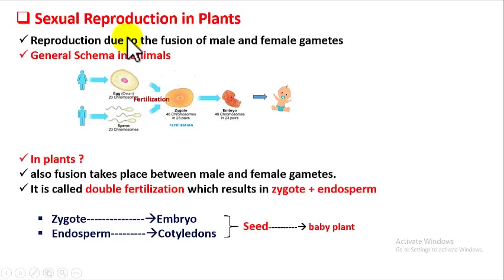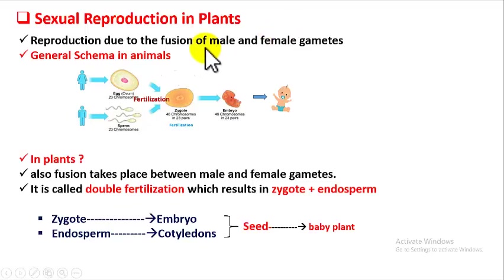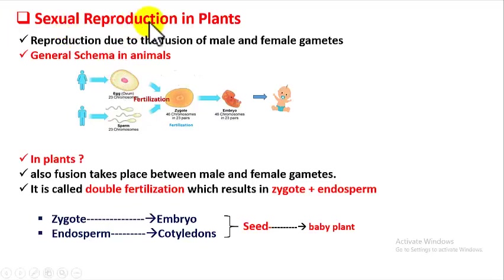Good morning students. Today we are going to learn about sexual reproduction in plants. We have already done sexual reproduction in animals, so by now you know what sexual reproduction is. It is a kind of reproduction in which baby organisms are produced due to the fusion of male and female gametes.